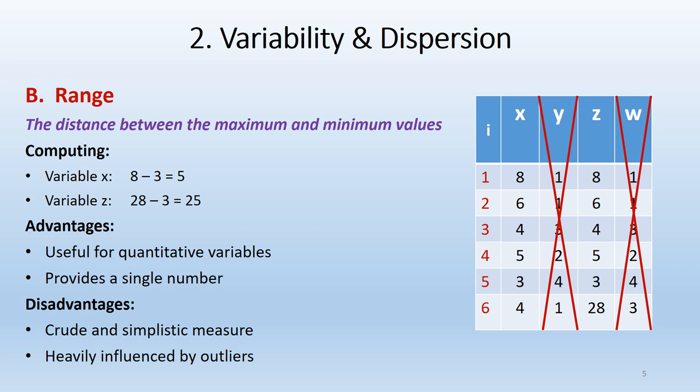For variable X, the maximum value observed is 8 and the minimum is 3. So the range is 8 minus 3, giving us a range of 5. For variable Z, the highest value is 28 and the lowest is 3. So 28 minus 3 gives a range of 25 for variable Z.